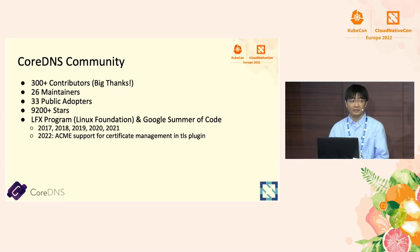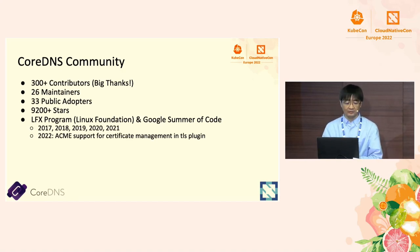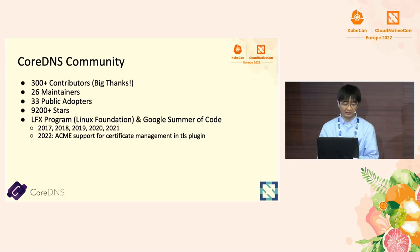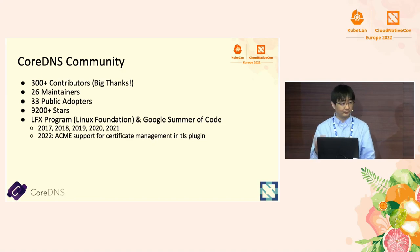Another thing I want to discuss is the Core DNS community. The growth of Core DNS is always associated with the growth of the community. At the moment we have 300 contributors, 26 maintainers, and 32 public adopters. If your company or institution uses Core DNS and is willing to have its name shown, you can create a PR in the Core DNS repo to add your company to the public adopters list — and by doing so, you become a contributor.